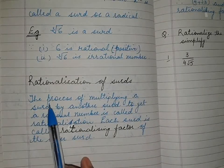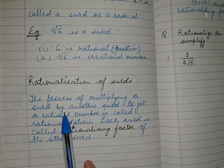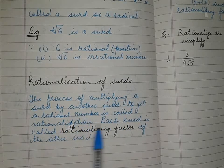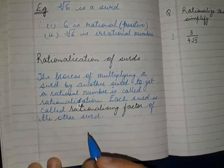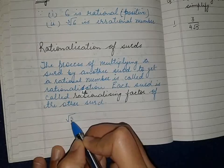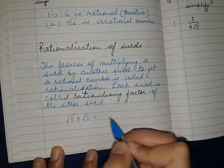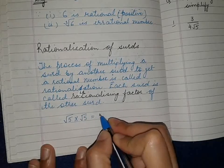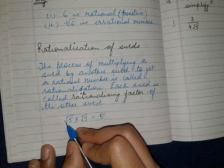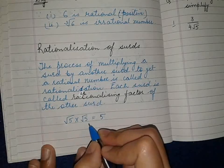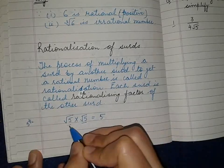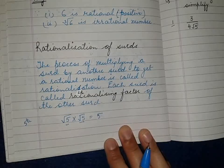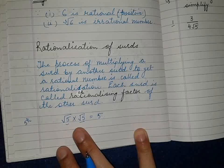Rationalization means the process of multiplying a surd by another surd to get a rational number. If we multiply two surds and we get a rational number, then that method is known as rationalization, and each surd is called the rationalizing factor of the other. For example, root 5 multiplied by root 5 — that is root 5 to the power 1 by 2 — gives 5, a rational number, so this is rationalization. Root 5 is called the rationalizing factor of root 5.